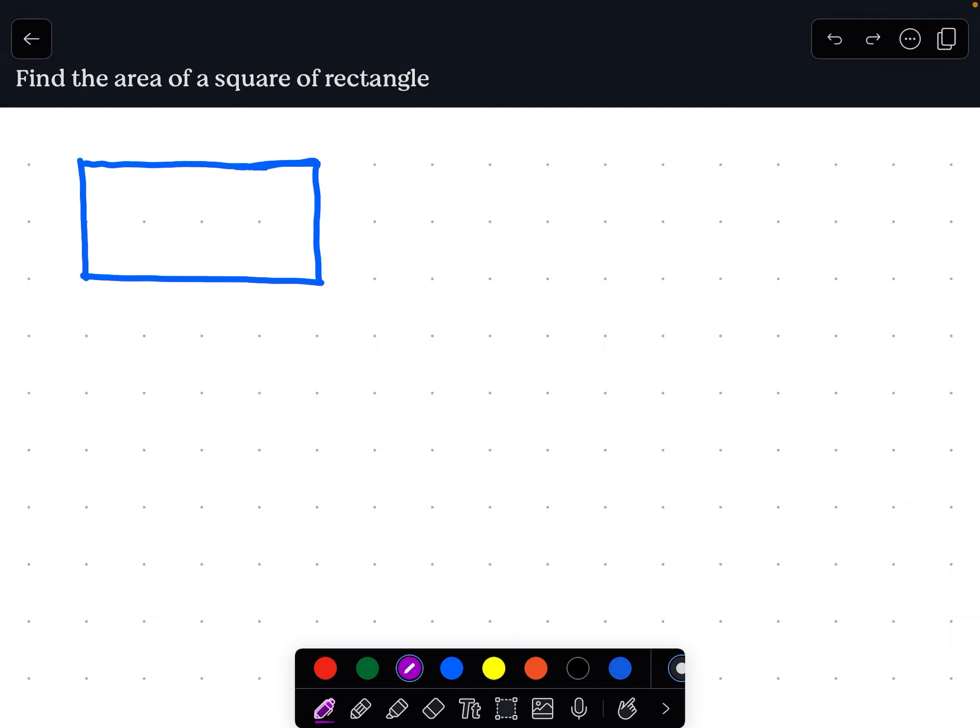Now, what exactly is the area? The area is all that space inside, all of this space inside. And that is different than the perimeter. The perimeter is the length of all the sides around. But the area is different. It's all this space inside.